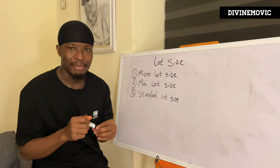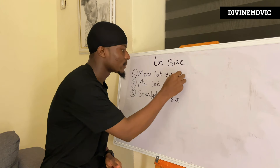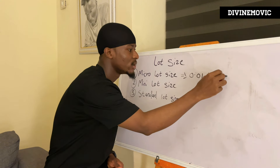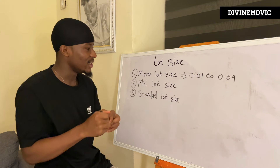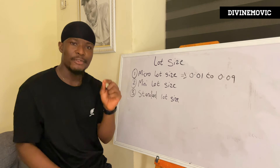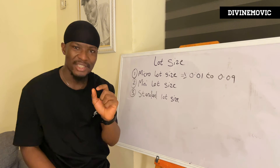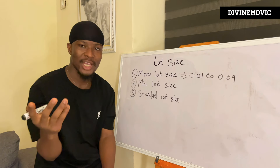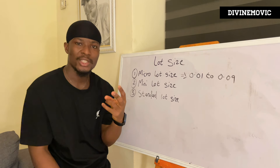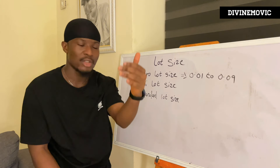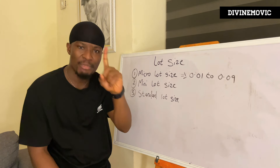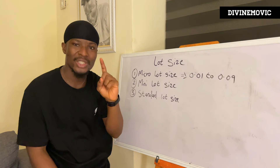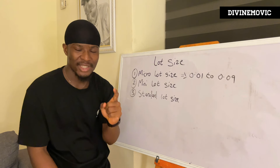The micro lot size ranges from 0.01 to 0.09. In this lot size, if you use a 0.01, one pip movement is worth $0.10. If you use a 0.02 lot size, one pip movement is worth $0.20 — and so on, up until you use 0.09, where one pip movement is worth $0.90. You have to keep this at the back of your mind.